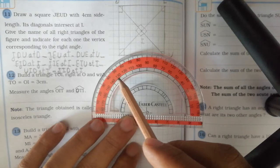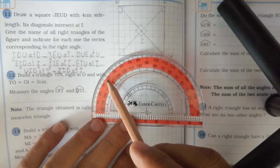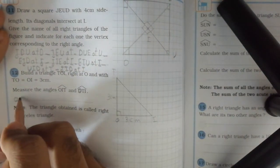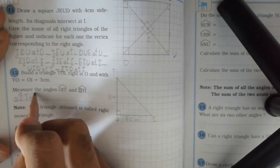We find the measure of angle OIT equals 45 degrees. So OIT equals 45 degrees.